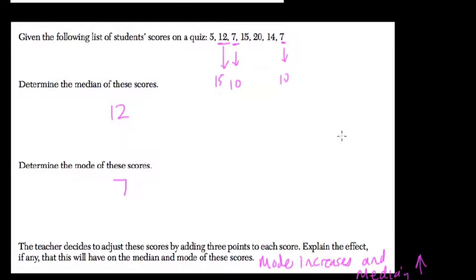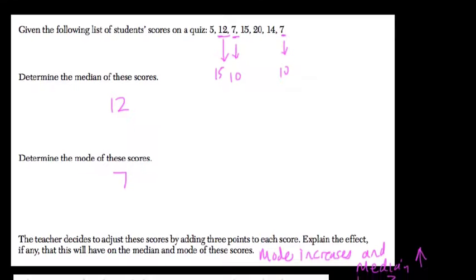And the same is true for the mean as well. In fact, these are measures of center: mean, median, and mode. When you shift everything up by 3, you also shift those centers up by 3.